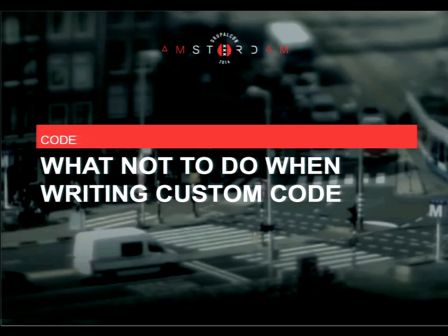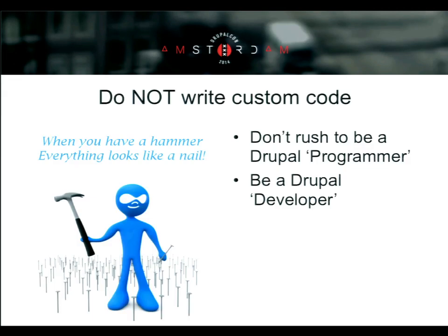Now let's talk about what not to do when writing custom code. First rule: do not write custom code. Don't rush to become a Drupal programmer — be a Drupal developer. Because when we have a hammer, everything looks like a nail. When you have a powerful hammer like Drupal's API or Drupal's hook system, every single problem looks solvable with hook X, Y, Z. Don't do that. Go back to the first rules — think whether you can do this using site building, using contributed modules. Think whether there is a simpler, easier, better Drupal way of doing things rather than writing custom code.